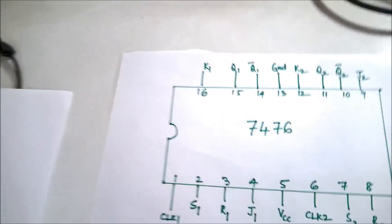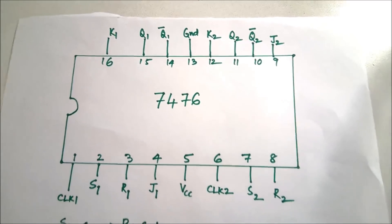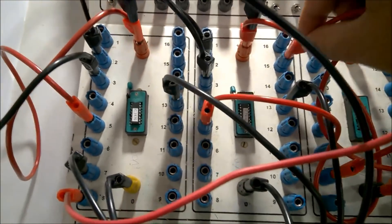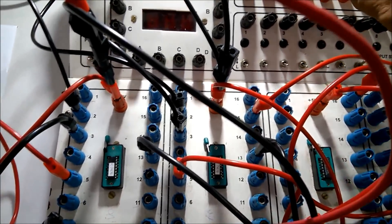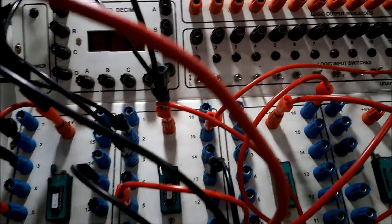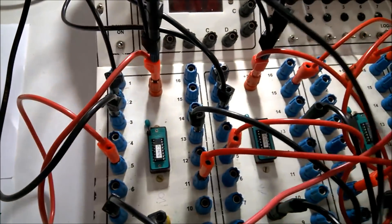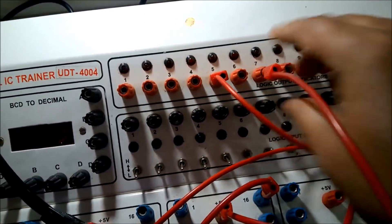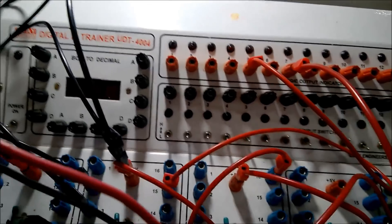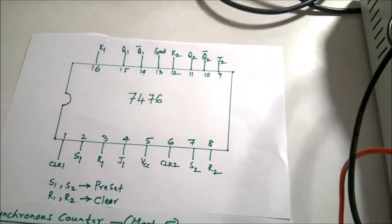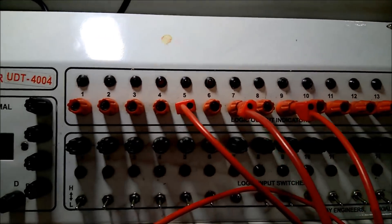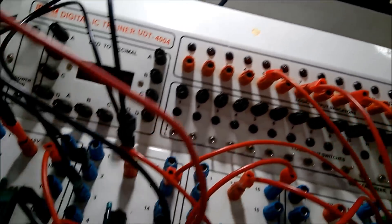Q3 is available in the second IC. From the pin diagram, Q1 is pin 15, so in the second IC pin 15 gives Q3 — the most significant bit — connected to the output. Q2 is pin 11 in the first IC, connected as the next significant bit. Q1 is again pin 15 in the first IC, and all these outputs are connected to the output display.